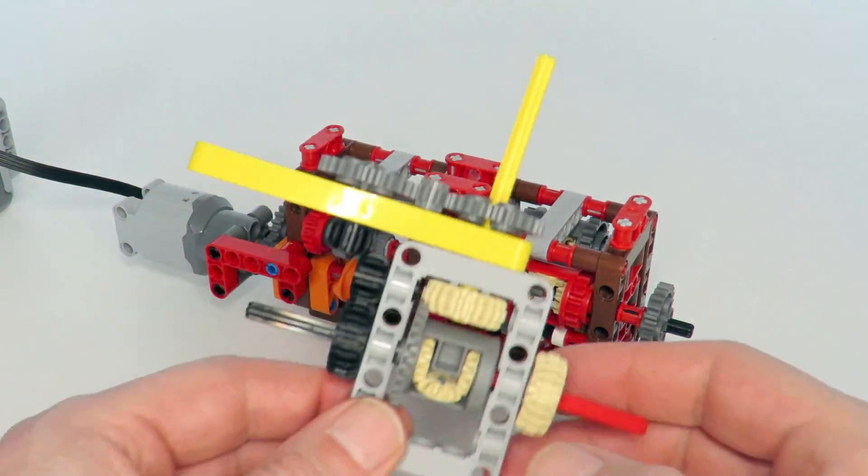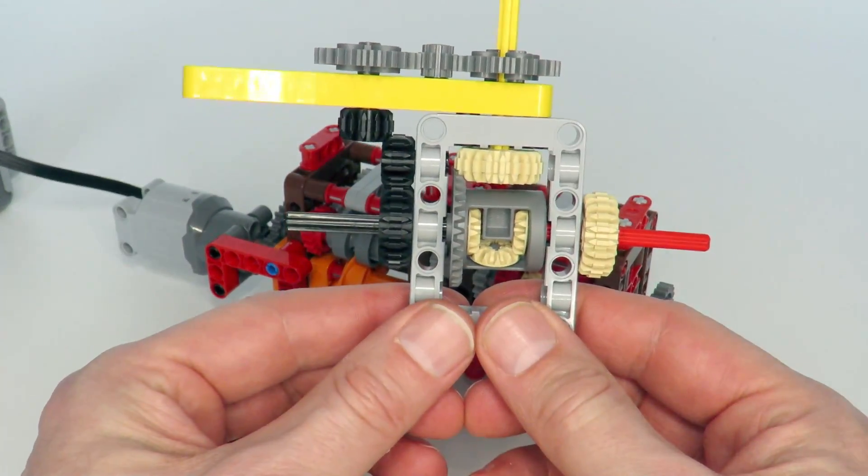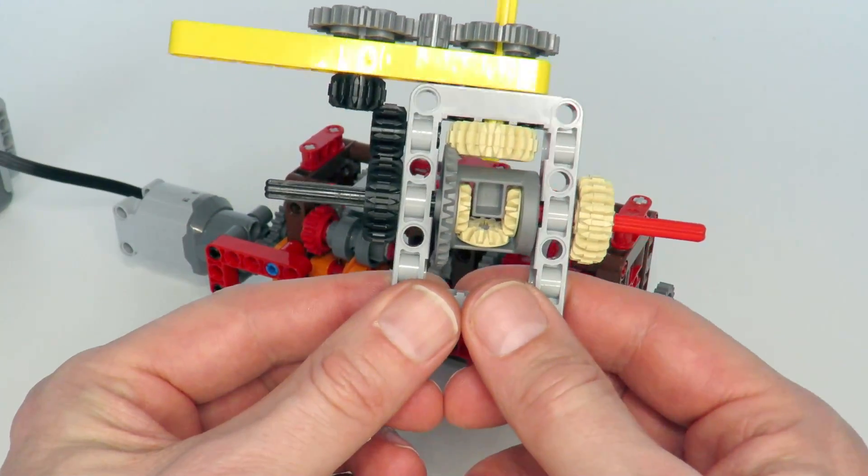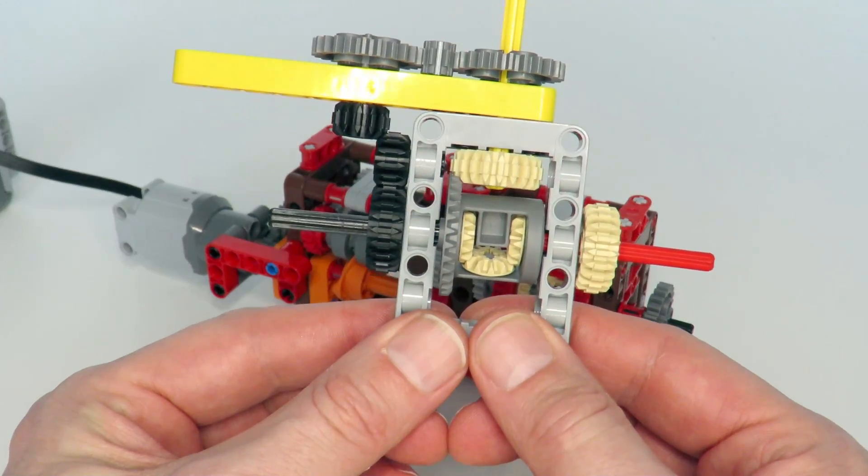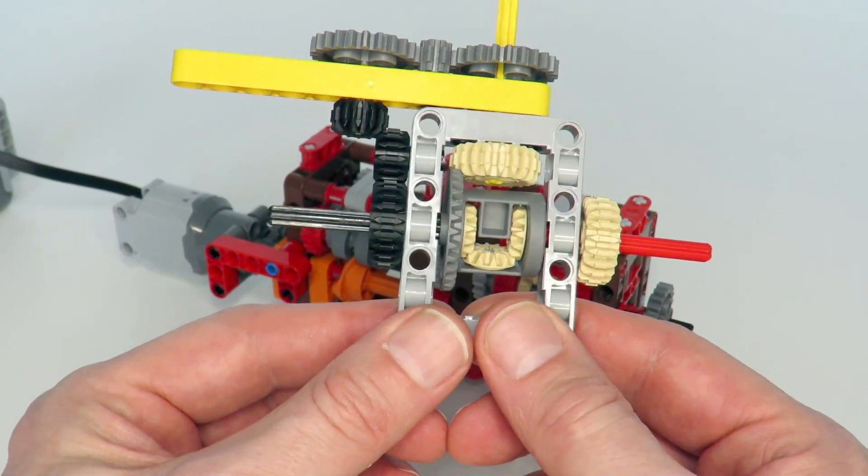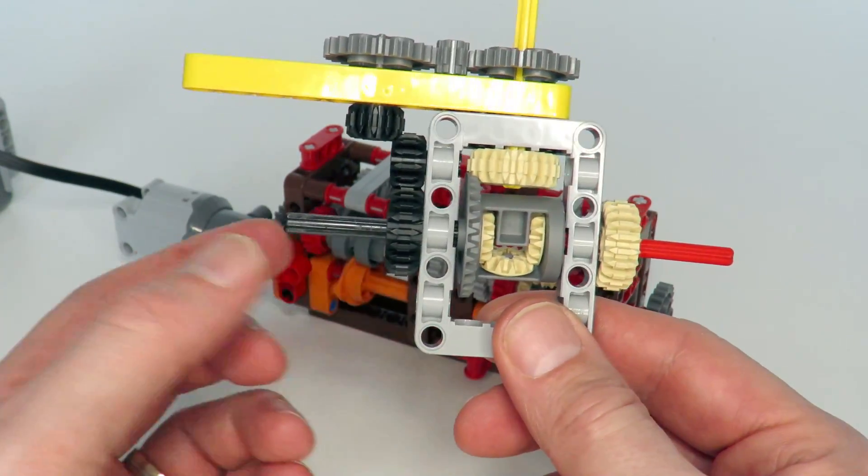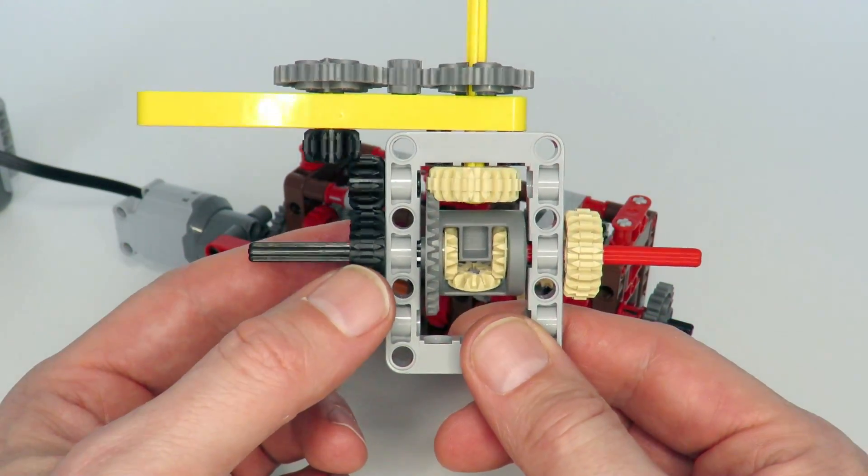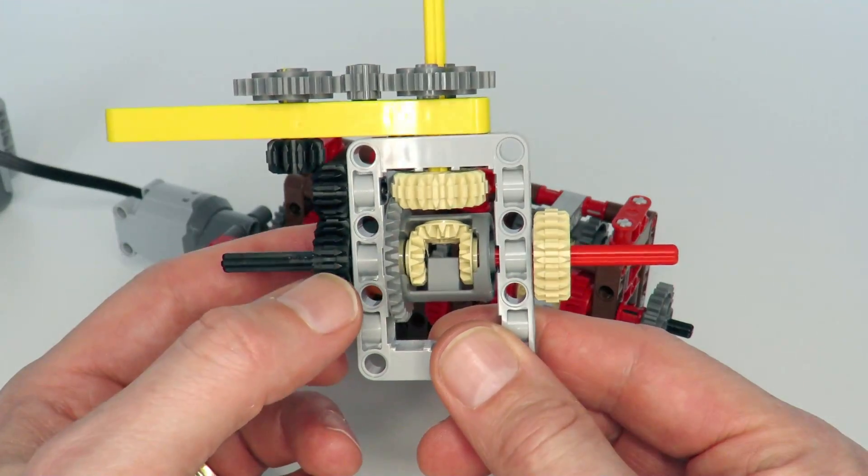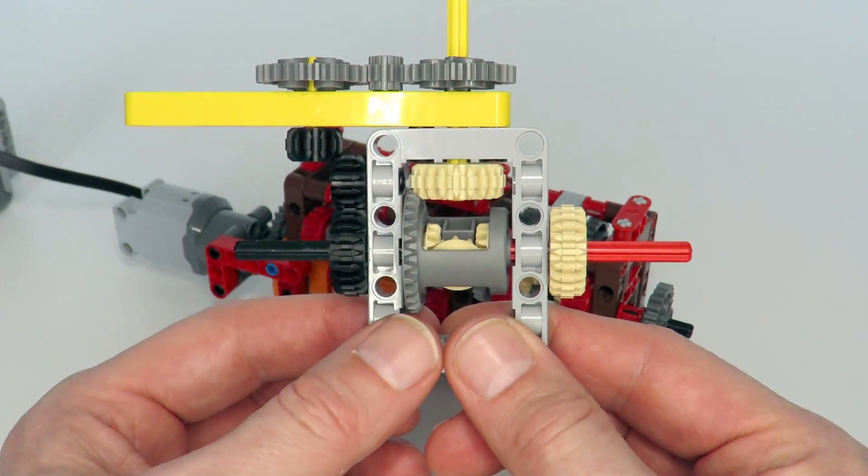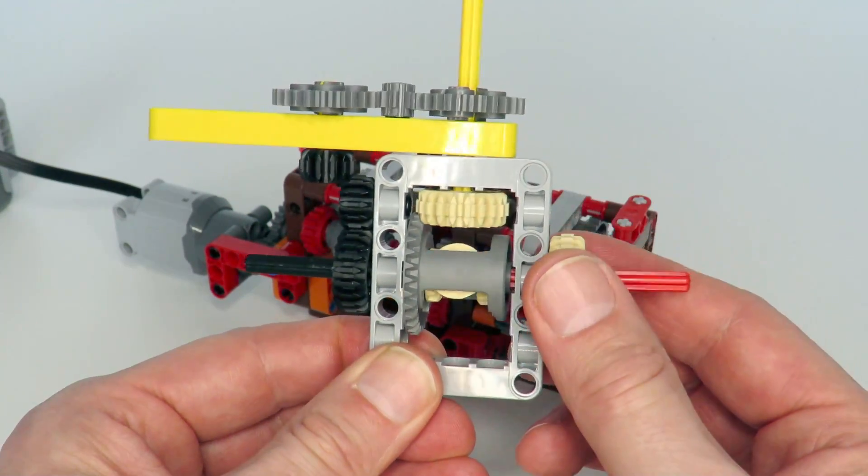So how do you get an axle that can be driven in one direction but not the other? Well, here's one example of how you can do it. I came across this particular design on the Eurobricks forum and someone demonstrated this particular mechanism, which was a really fascinating mechanism. And what this allows you to do, you can spin this side and you can see the red axle starts to turn.